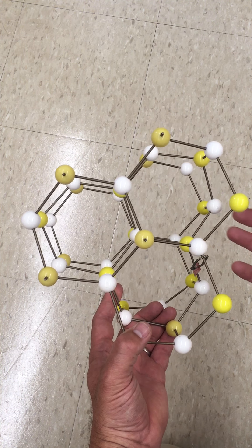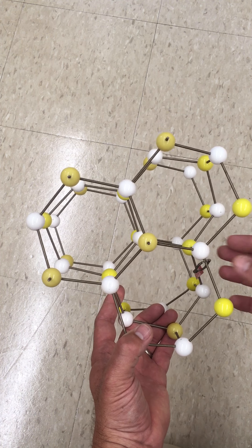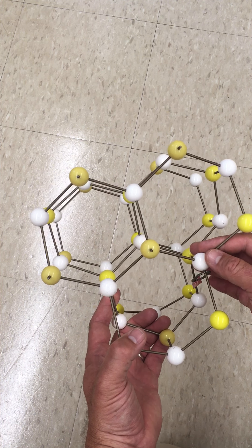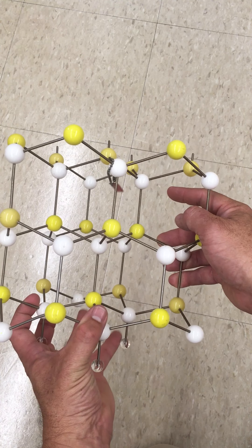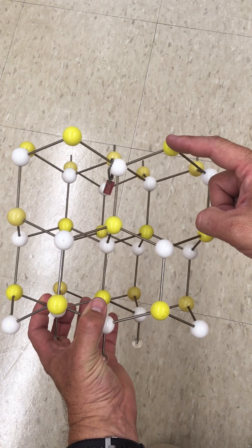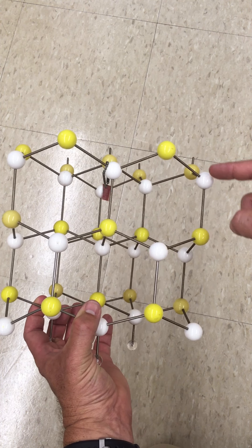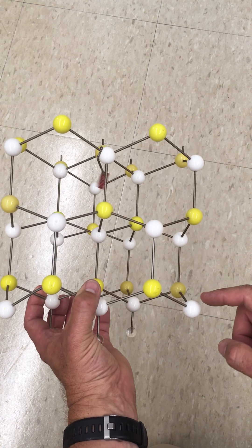And in this structure, it's more of a hexagonal arrangement of ions. If I look at this from the side where we can see the layers again, we have alternating sulfide and zinc layers throughout.